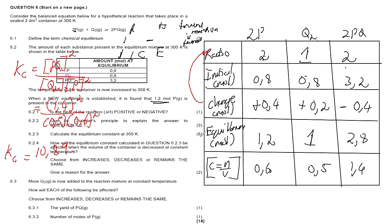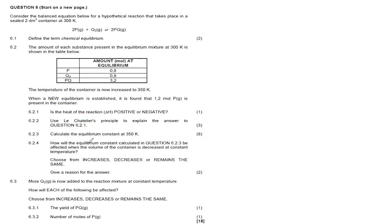The only tricky part was that the reverse reaction was being favored, so you add to the reactant side but subtract from the product side. Keep that in mind. Now 6.2.4 says: how will the equilibrium constant calculated in 6.2.3 be affected when the volume of the container is decreased at constant temperature? Choose from increases, decreases, or remains the same.